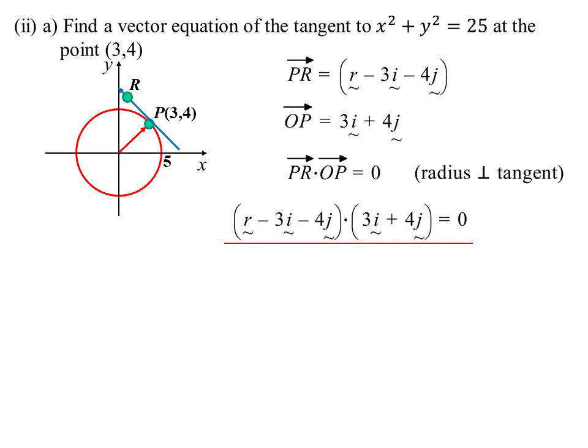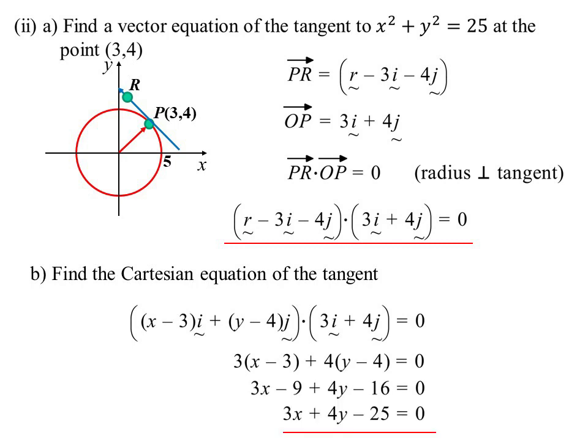So, find the Cartesian equation now of that tangent. We're going to have to use the dot product anyway. It'll be 3 times (x - 3) + 4(y - 4), and I put it in general form: 3x + 4y - 25 = 0.